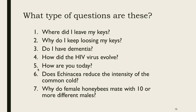The final one — Why do female honeybees mate with 10 or more different males? — is clearly a causal question; it starts with 'why.' That's the question you and I are going to work through together as we explore the scientific method. I try to keep my lectures under 30 minutes, so I'm going to stop here and restart in part two of Chapter 1. I'll see you in the next video where we'll answer that honeybee question.